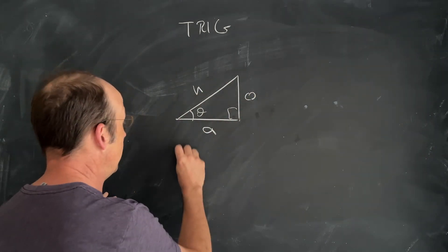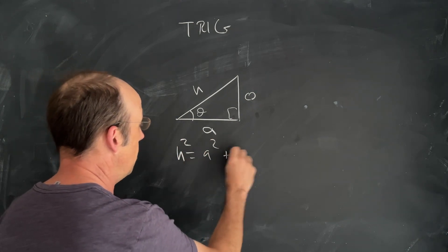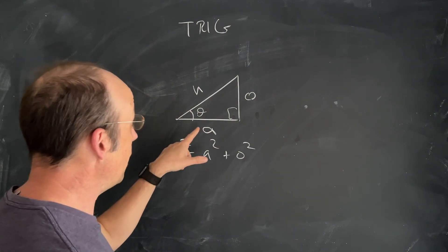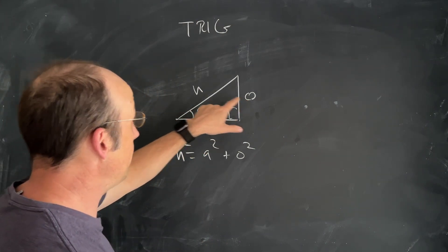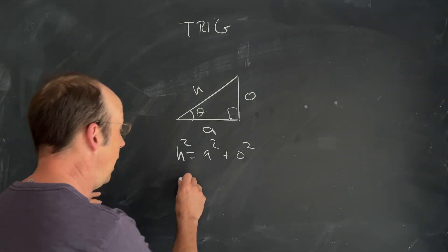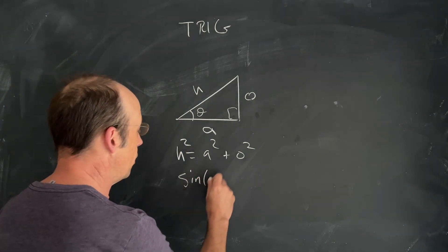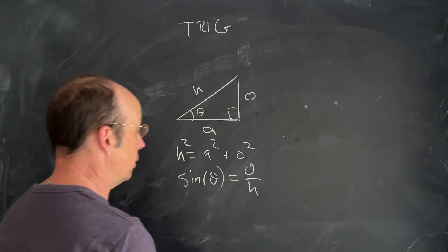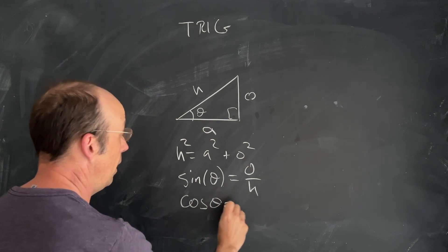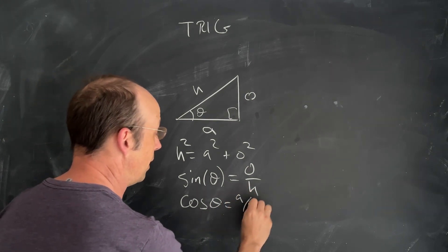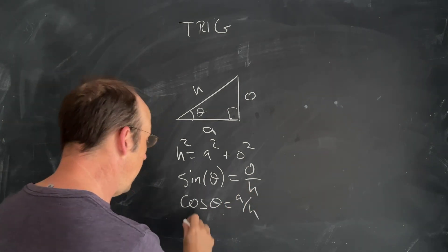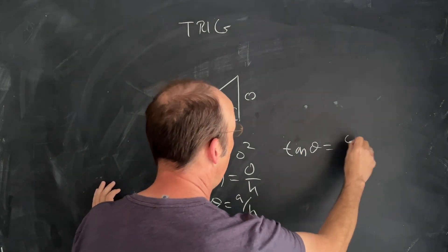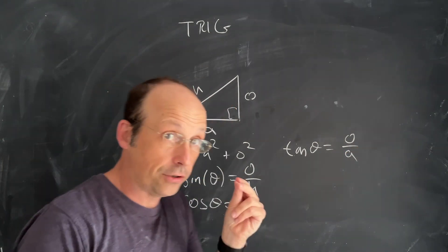The first thing we need is the relationship between the sides — that's called the Pythagorean theorem: H² = A² + O². Next, the sine of angle theta equals the opposite over the hypotenuse, the cosine of theta equals the adjacent over the hypotenuse, and the tangent of theta equals opposite over adjacent. Those are all the ratios you need to know.